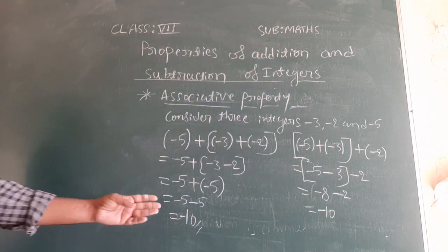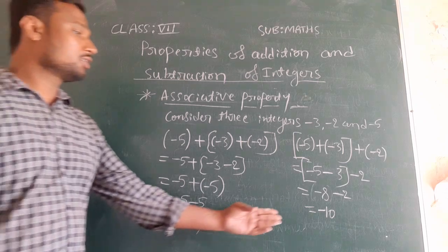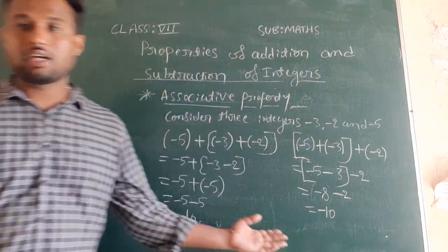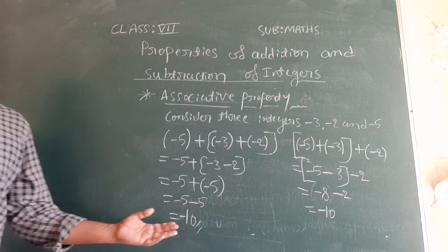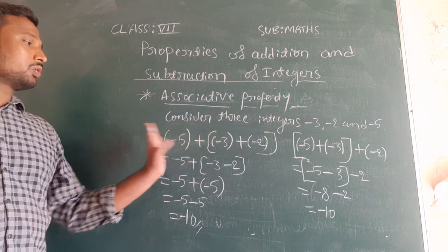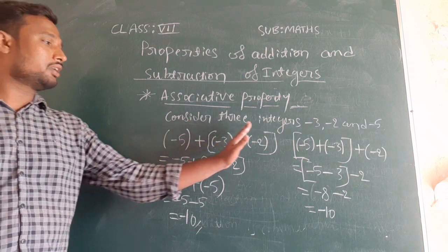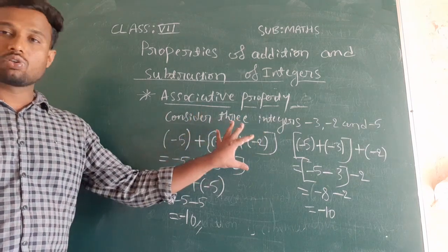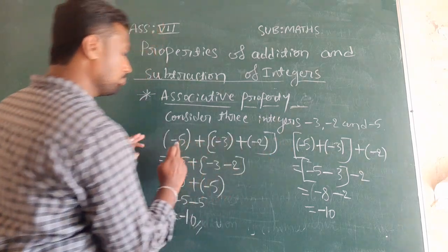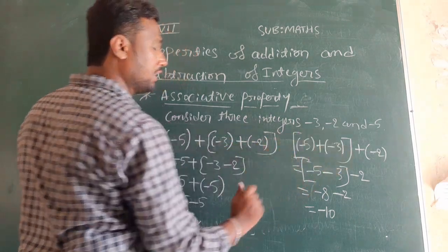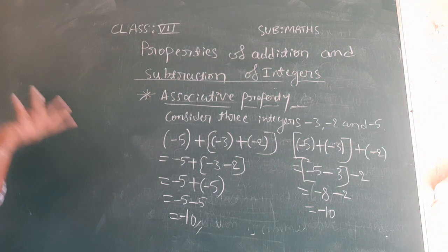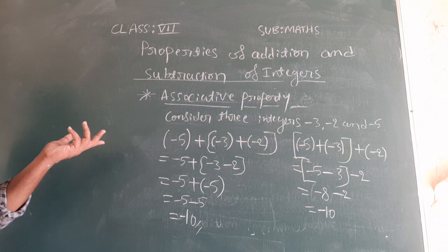You can see: here also we got minus 10, and here also we got minus 10. In both cases we are getting the same answer. The difference is: here we considered minus 5 outside the group and minus 3, minus 2 inside one group; here we considered minus 5 and minus 3 inside one bracket and minus 2 outside. Then also we are getting the same answer.